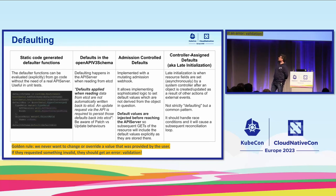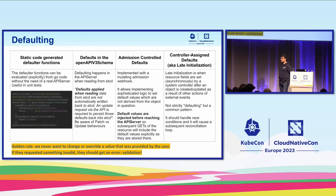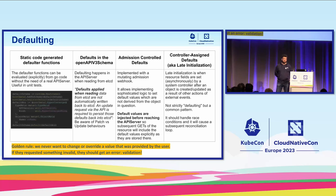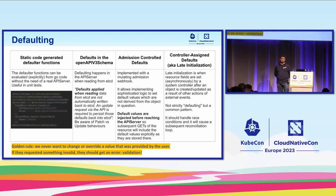We need separate mechanisms because they do different things. The statically generated code from the Kubernetes code-generator gives us initialization code we can use in unit tests — simply call the function to get all defaults needed. On the other side, the OpenAPI v3 schema mechanism for defaults is enforced by the API server, so when you run unit tests without a real API server you won't get those values. That's why we need both.